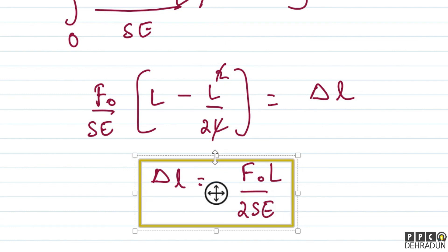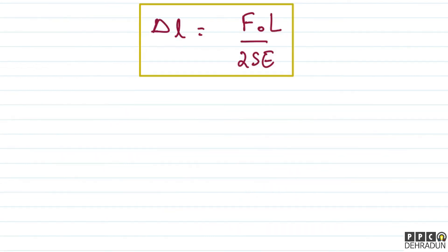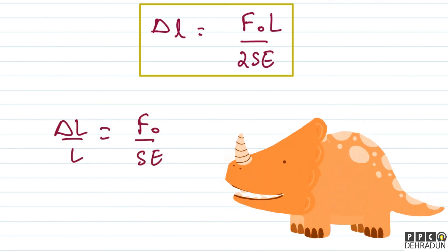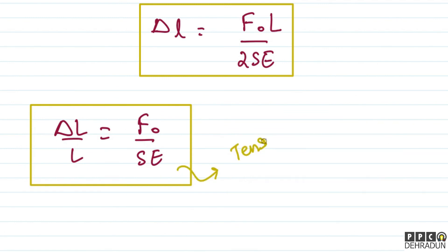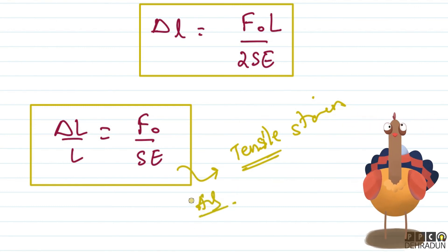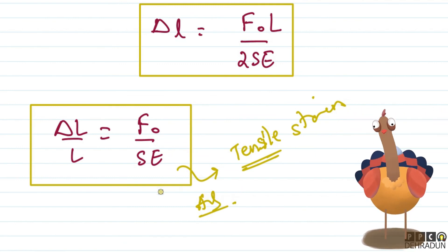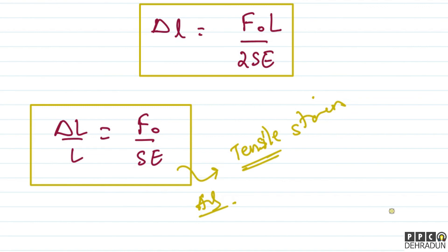This is the overall elongation in the rod. We were asked for strain, so delta L upon L equals F0 upon 2SE. But note that this is actually tensile strain, not compressive strain, because the body's length is increasing. So tensile strain has come out, not compressive strain. This is our final answer. I hope you understood this solution well. If any doubt remains, feel free to contact me. Take care, bye bye.